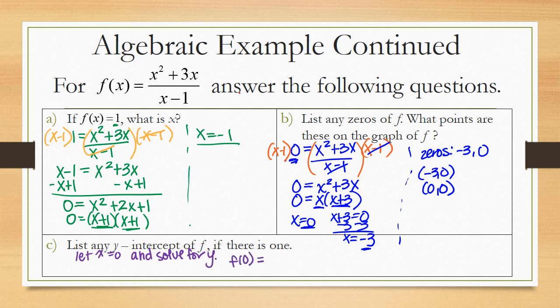So we get f of 0 equals 0 squared plus 3 times 0 all over 0 minus 1. That simplifies down to 0 over negative 1, which is just 0. So the y-intercept is the point 0, 0.